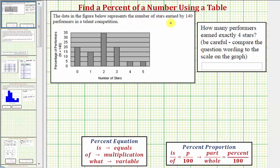The data in the figure below represents the number of stars earned by 140 performers in a talent competition. Notice along the horizontal axis we have the number of stars earned, and the vertical axis is not the number of performers—it's the percent of performers earning a particular number of stars.